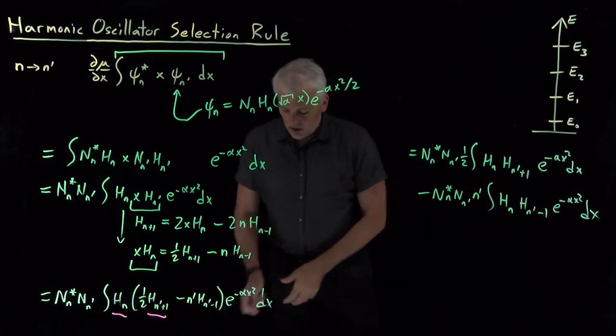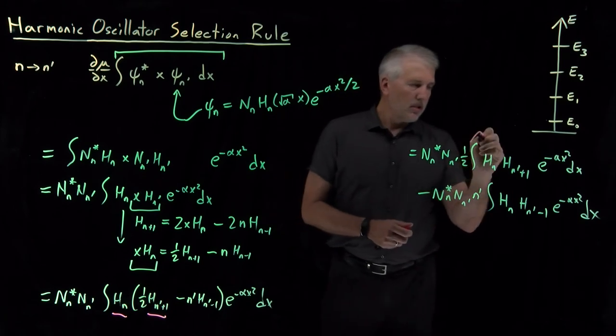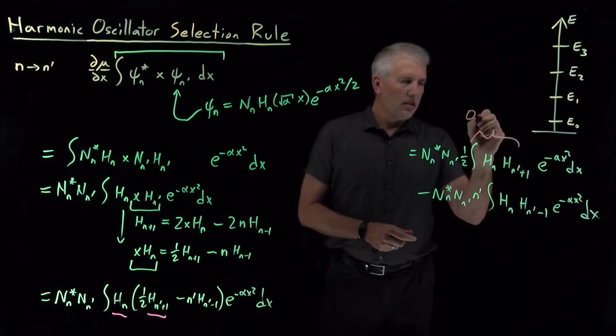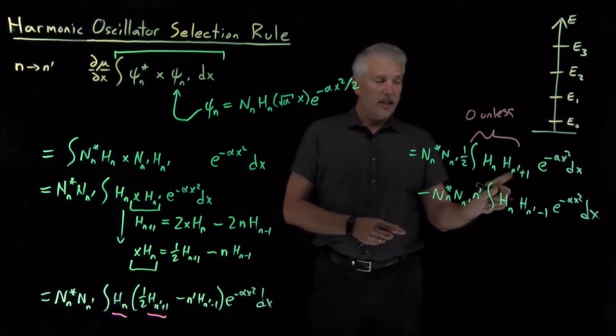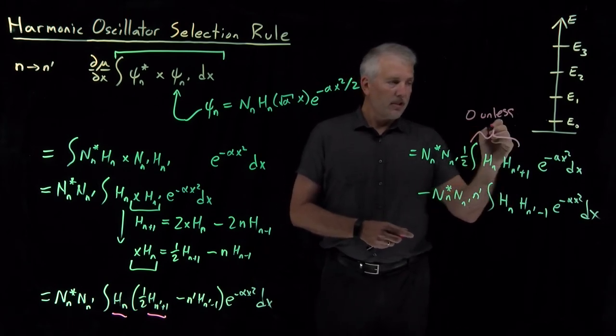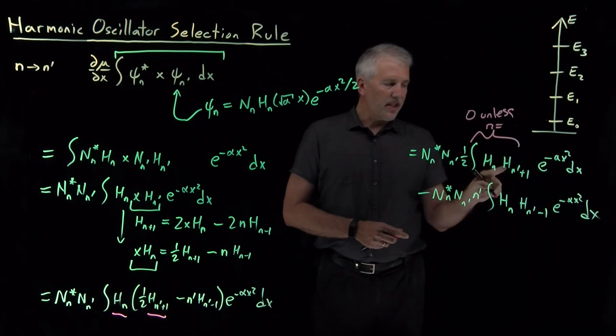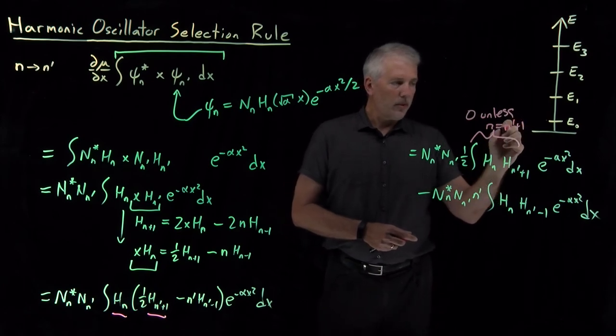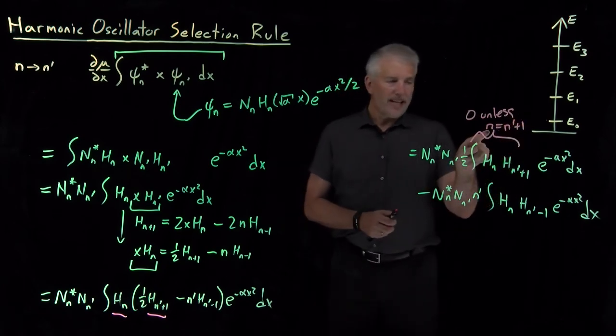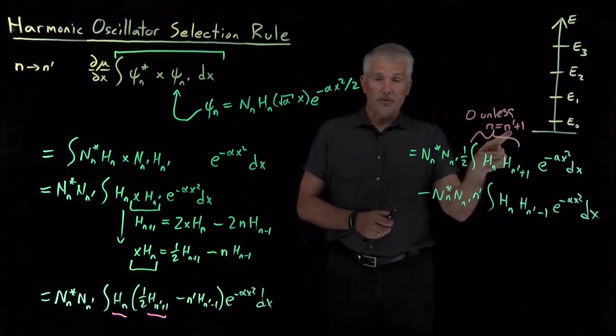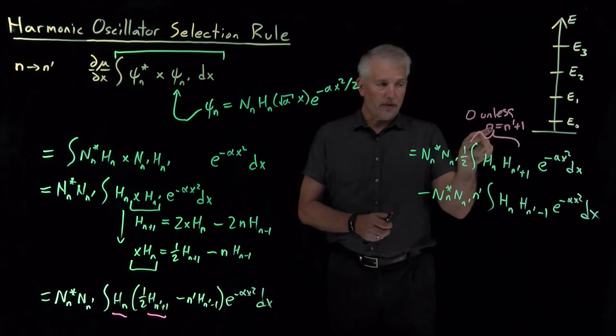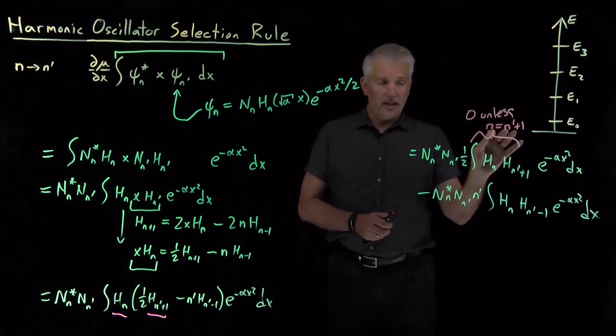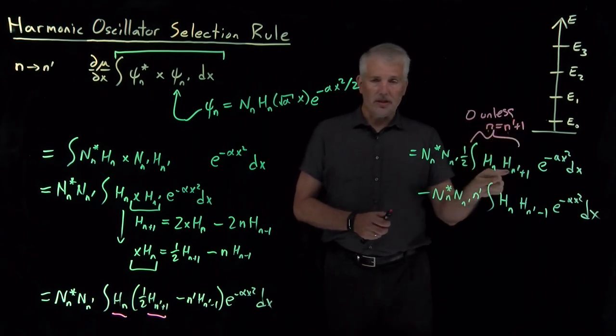So what that means is this whole integral is 0 unless these are actually the same wave function. If the n-th wave function is the same as the n prime plus 1 wave function, for example, if n is 5 and n prime is 4, so that 4 plus 1 is the same thing as 5, if I'm making a transition from the 5th to the 4th, that's okay. But any other transition is going to cause this integral to be 0.